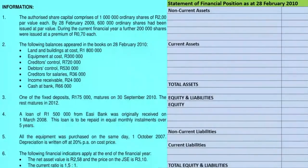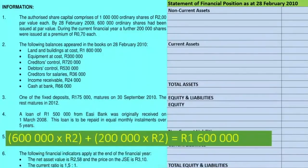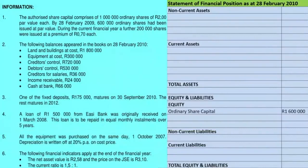Let's see how we record this. We are told that by 28 February 2009, 600,000 ordinary shares had been issued at par value — that's 600,000 shares times two rand each. During the current financial year, a further 200,000 shares were issued, so we record those at 200,000 shares times two rand each. To get the total ordinary share capital, we take 600,000 shares times two rand plus 200,000 shares times two rand, giving us a total of 1,600,000 rand. That goes under equity as our ordinary share capital: 1,600,000 rand.